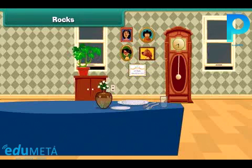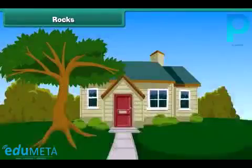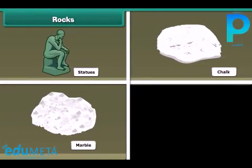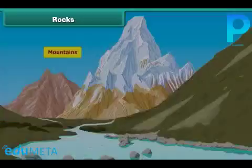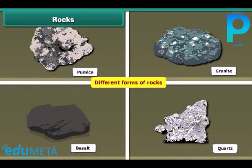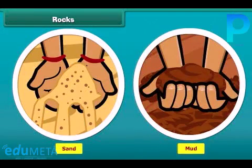As we can see, rocks are all around us. We can also see different things made up of rocks inside our house, in our yard, on the road, and everywhere. Statues, chalk, marble, pencil lead, mountains, and soil are all different forms of rocks. You will be surprised to know that rocks aren't always huge solids — sand and mud are also forms of rocks.